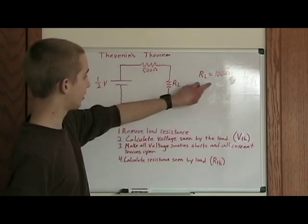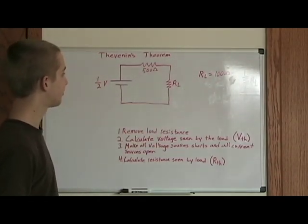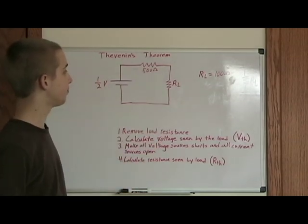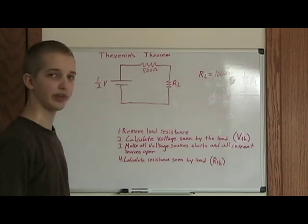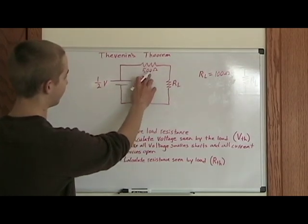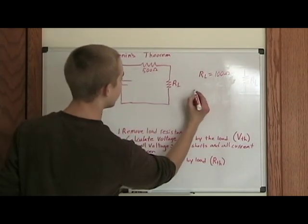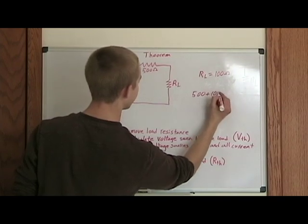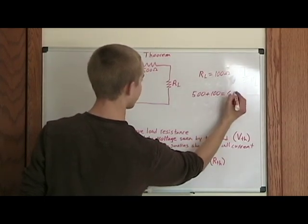So let's say that the load resistance is 100 ohms, and we want to find the current going through the total circuit, or going through that load. And we find that it's much easier to do that in the Thevenin equivalent circuit, because all we have to do is add up the Thevenin resistance, 500 ohms, plus the load resistance, 100 ohms, which is of course 600 ohms.